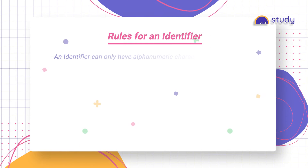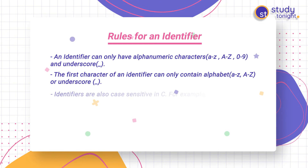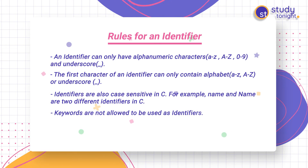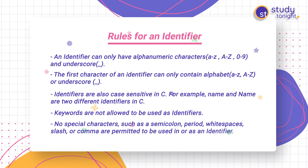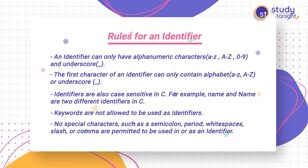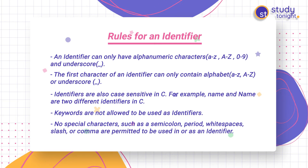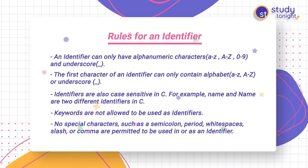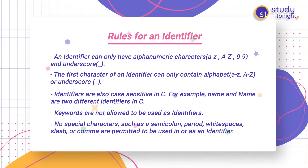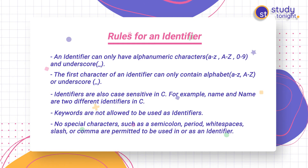These are the rules for identifiers. An identifier can only have alphanumeric characters — that is, lowercase letters a to z, uppercase letters A to Z, digits 0 to 9, and the underscore character. The first character of an identifier can only be an alphabet or an underscore — it should not be a number.